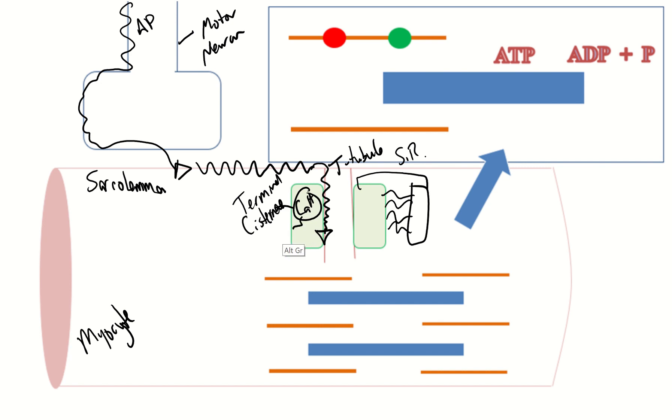So once this calcium is released this calcium is going to head towards the sarcomere and the sarcomere is the functional unit of a skeletal muscle and so let's label some things about the sarcomere.